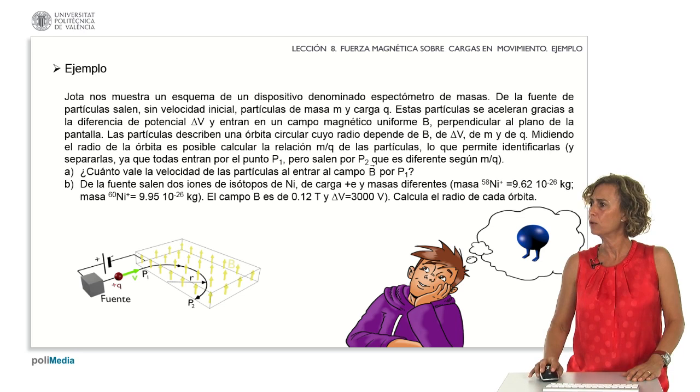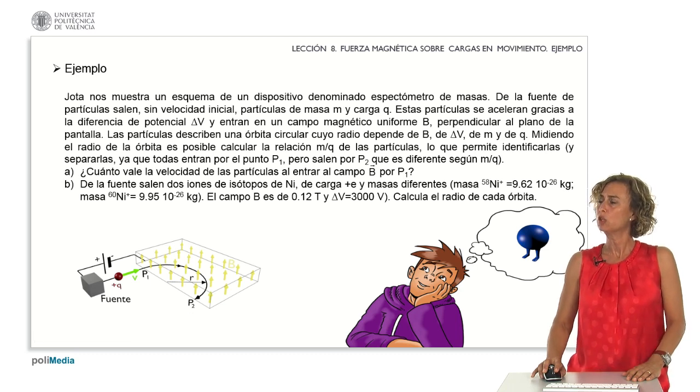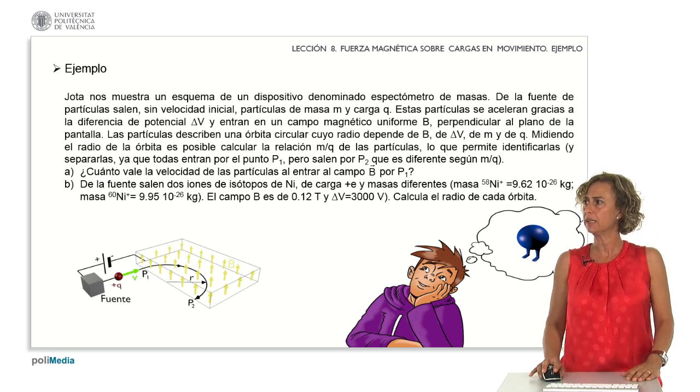But leave through P2, which is different according to m divided by q. We're tasked with determining the velocity of the particles entering the field B through P1.